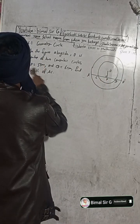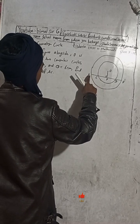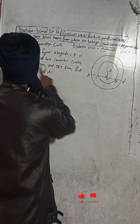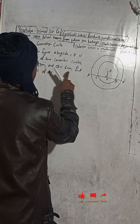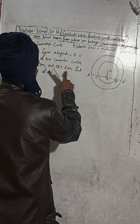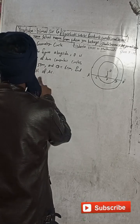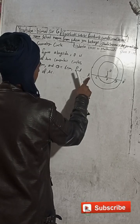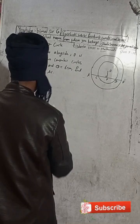If AP is equal to 5cm and CD is given as 6cm, find the length of AC. You have to find the AC length.